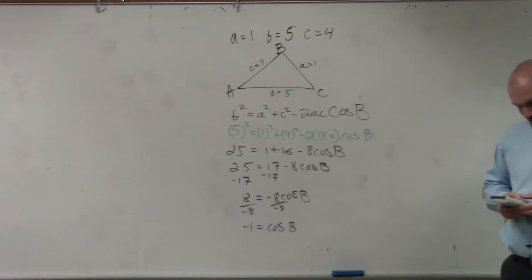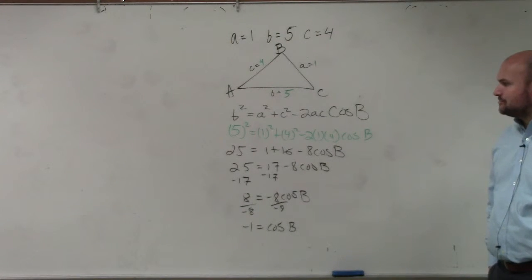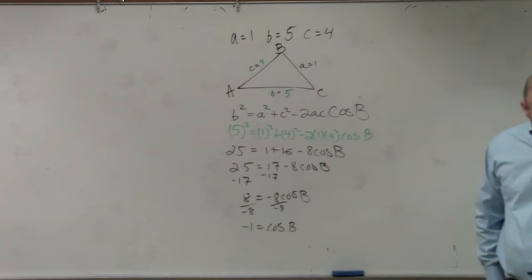So I take inverse cosine of negative 1, and I get 180 degrees. So if my one angle is going to be equal to 180 degrees, then obviously that's not going to be a triangle, right? You can't fit any other angles inside of there.